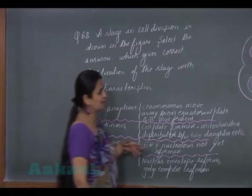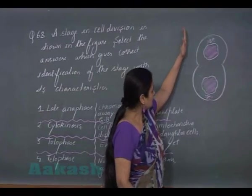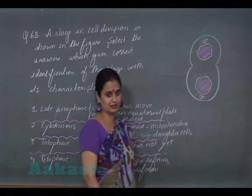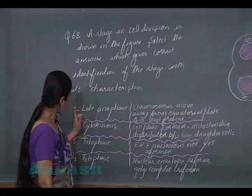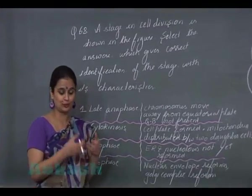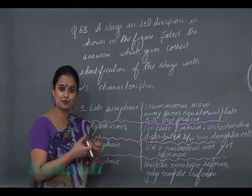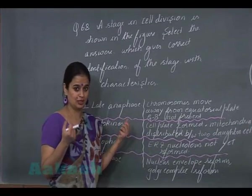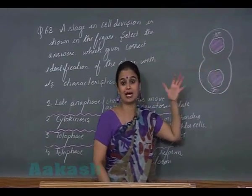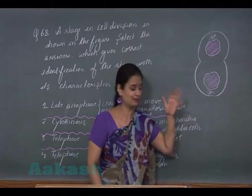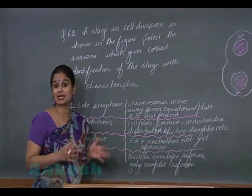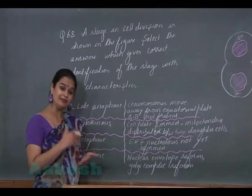Let's discuss question number 68. We have to identify which stage of cell division the figure represents and the major characteristics associated with it. The first option is late anaphase — in anaphase, daughter chromosomes move towards opposite poles. However, in this figure the identity of the chromosomes is not visible.